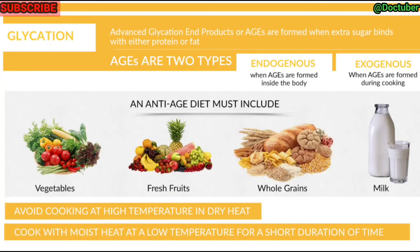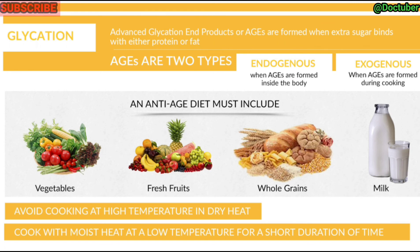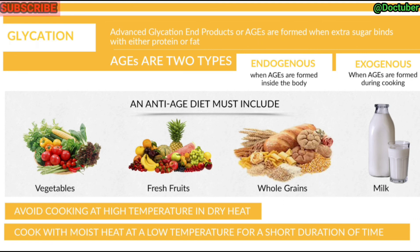To summarize: AGEs are formed when extra sugar binds with either protein or fat. Endogenous AGEs are formed inside the body, while exogenous AGEs are formed during cooking. An anti-AGE diet must include vegetables, fresh fruits, whole grains, and milk. We should avoid cooking at high temperatures in dry heat, and instead cook in moist heat at low temperature for a shorter duration. Thanks for watching — please like, share, and subscribe, and see you in the next episode.